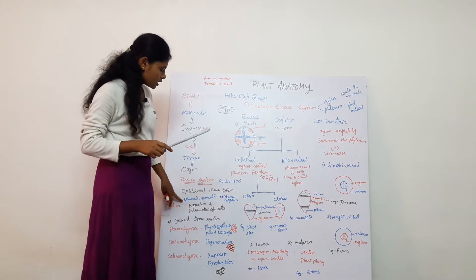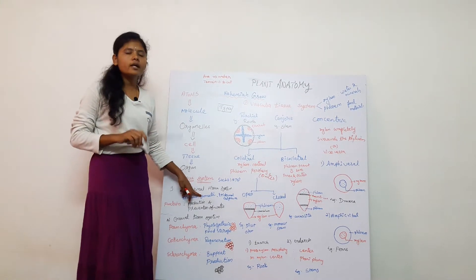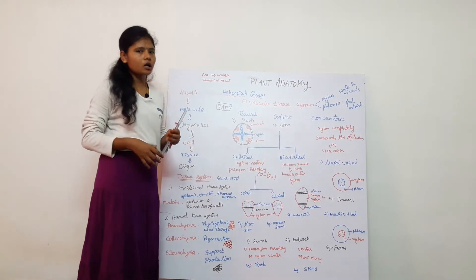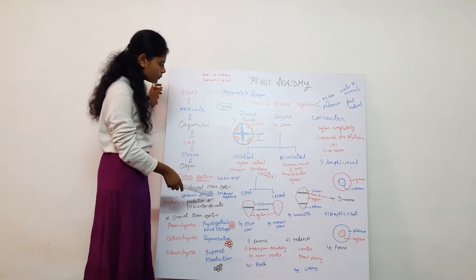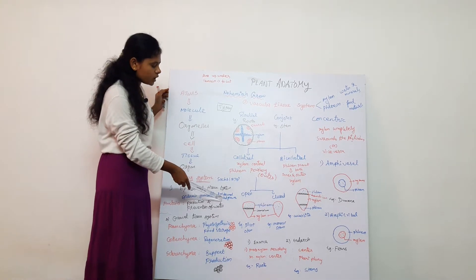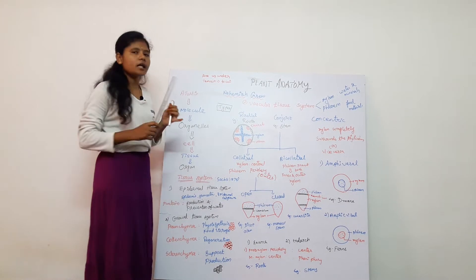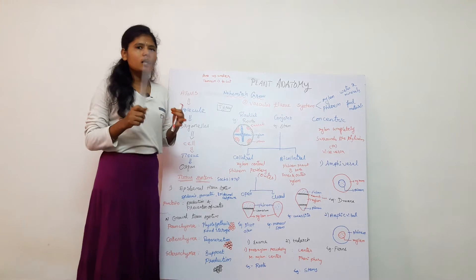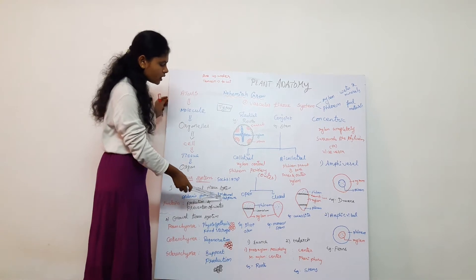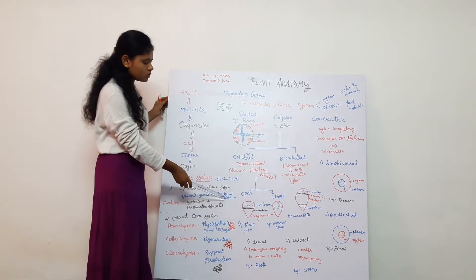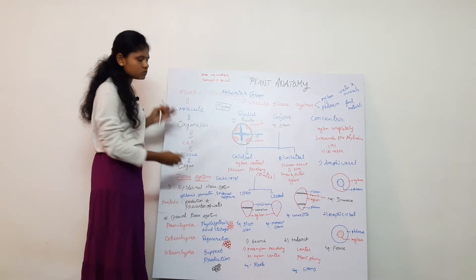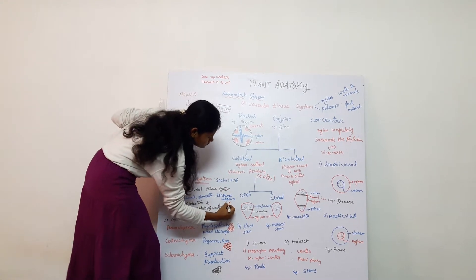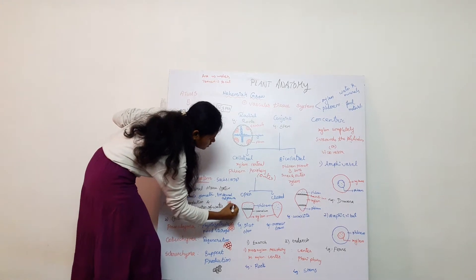In the epidermis, there is a minute pore-like structure called the stoma. It also includes trichomes and root hairs.